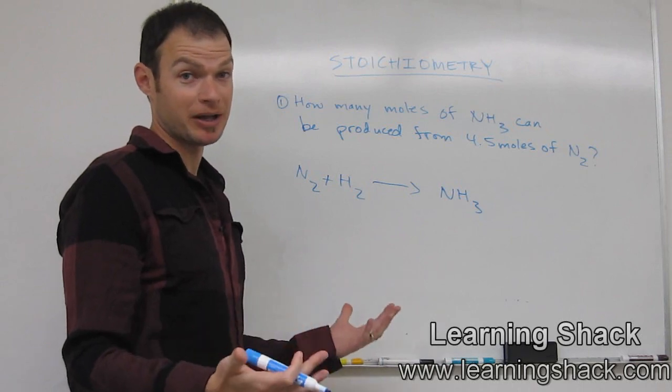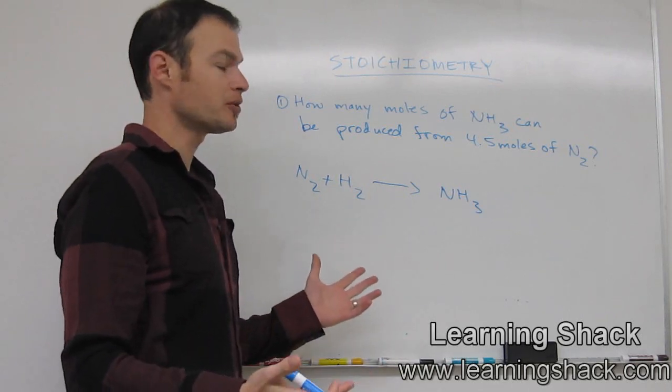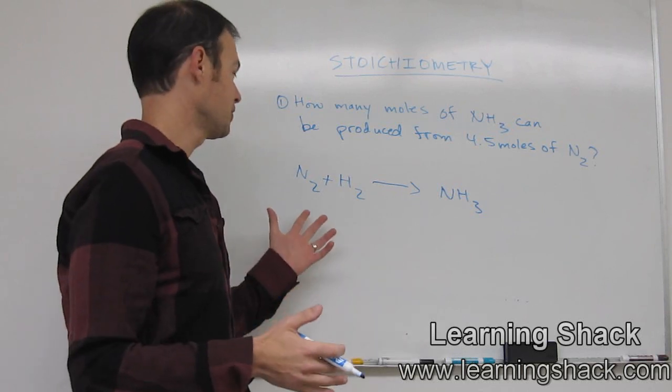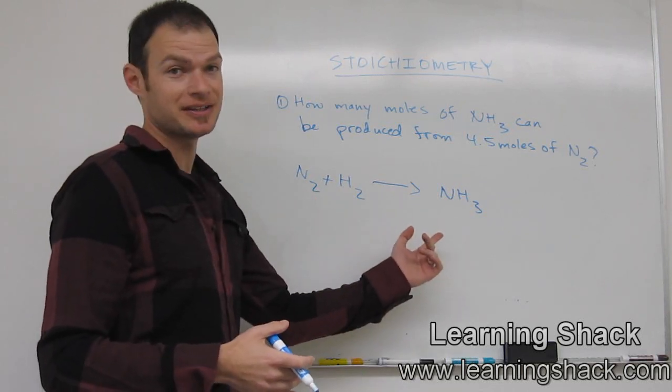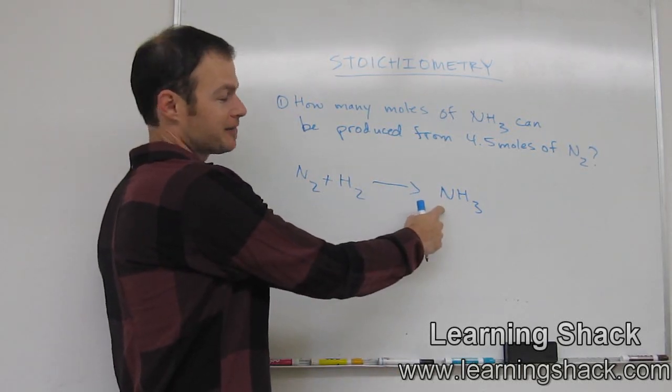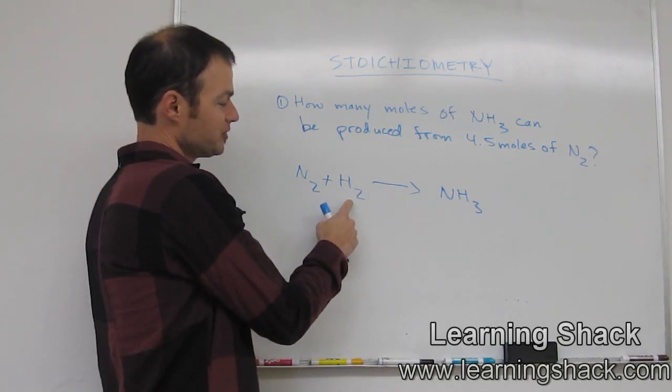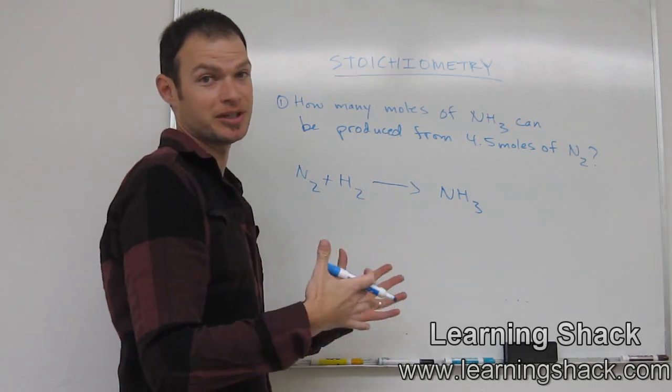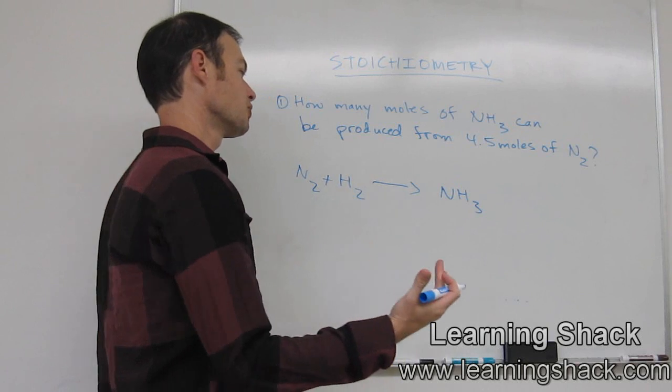The next step is we want to balance the equation. So when we go through and balance, what we're doing is we're making sure that all the atoms are equal on each side of the equation. What that means is if we have two N's over here, we want to have two N's here. If we have two H's here, we want to have two H's here, or whatever the common multiple would be that would be equivalent.